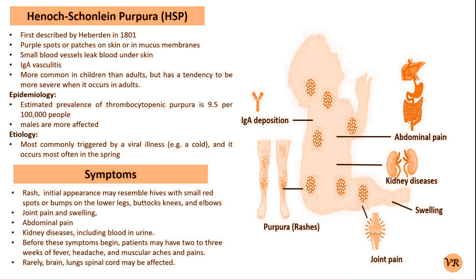Symptoms of HSP include purpura, that is purple rashes on the buttocks and legs, arthritis or arthralgia that is joint pain or swelling, abdominal pain that is colic pain, nausea, vomiting, and sometimes gastrointestinal bleeding. Kidney symptoms can include hematuria that is blood in urine, proteinuria that is protein in urine, and in more severe cases nephritis.